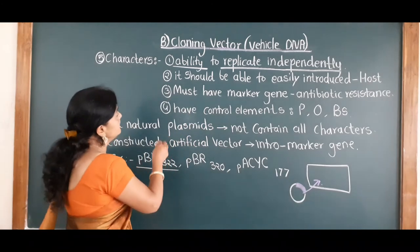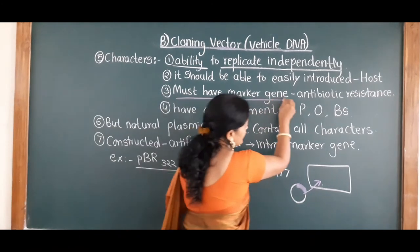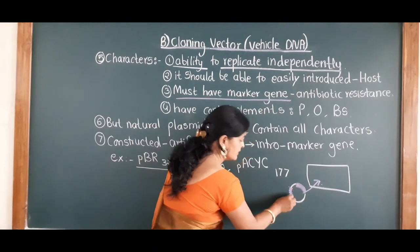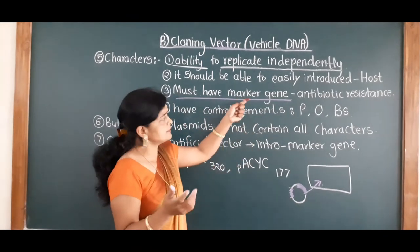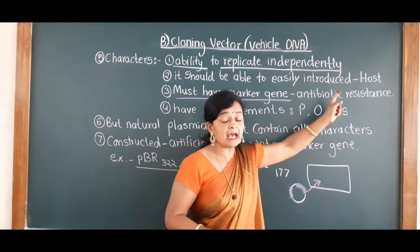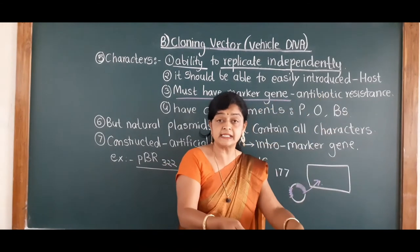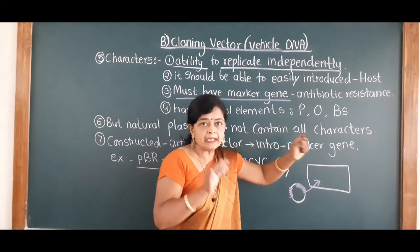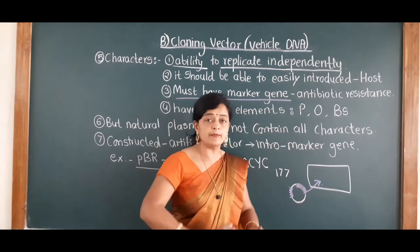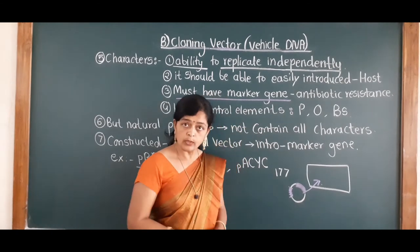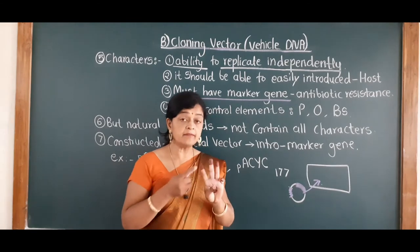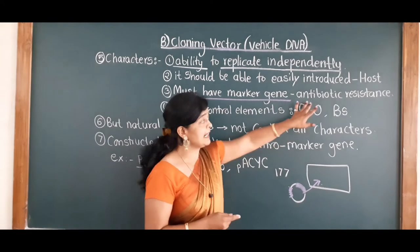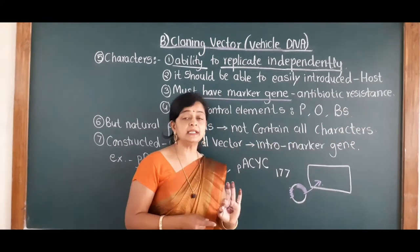Coming to the third character: they must have a marker gene. In this vector DNA, they must have a marker gene. The use of the marker gene is that it provides antibiotic resistance. Once the marker gene is present in the vector, no antibiotic can cause any type of harm to this bacteria. Vector should have this marker gene which acts as antibiotic resistance. Once the marker gene is there, bacteria will be protected from antibiotics.